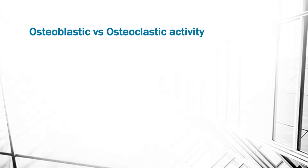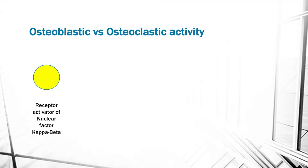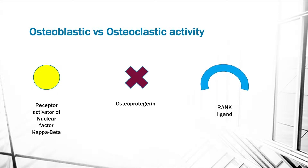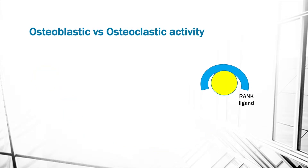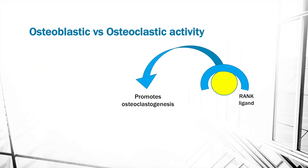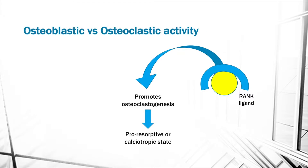Osteoblastic and osteoclastic activity are important concepts to understand. The first player is the receptor activator of nuclear factor kappa beta, or RANK. The next is osteoprotegerin, and the third is the RANK ligand — a ligand being a molecule to which another molecule binds. When RANK binds to the RANK ligand, this promotes osteoclastogenesis and produces a pro-resorptive or calciotropic state.